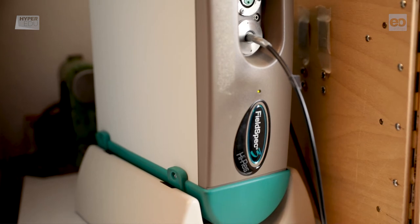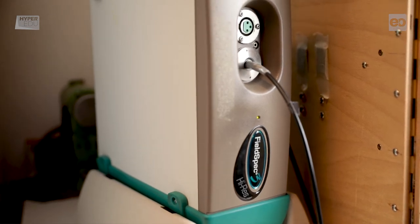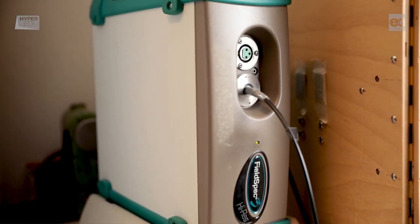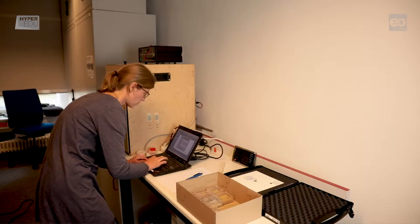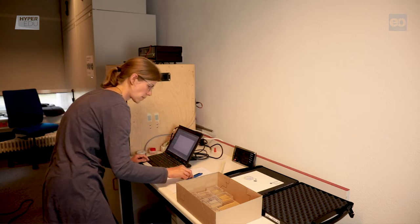Today we are using an ASD FieldSpec 3 Portable Point Spectroradiometer, specifically designed for both field and laboratory use. It allows both radiance and reflectance measurements and is widely used in remote sensing research.